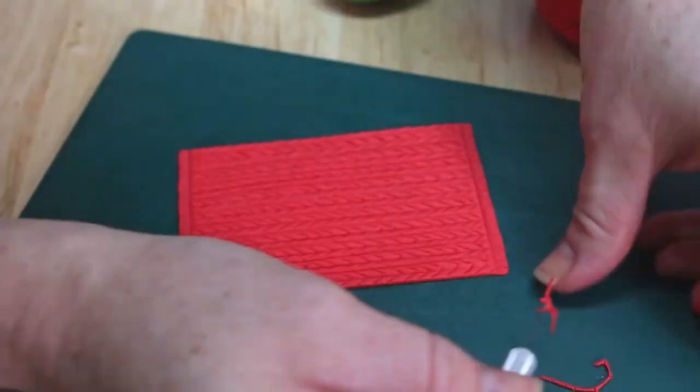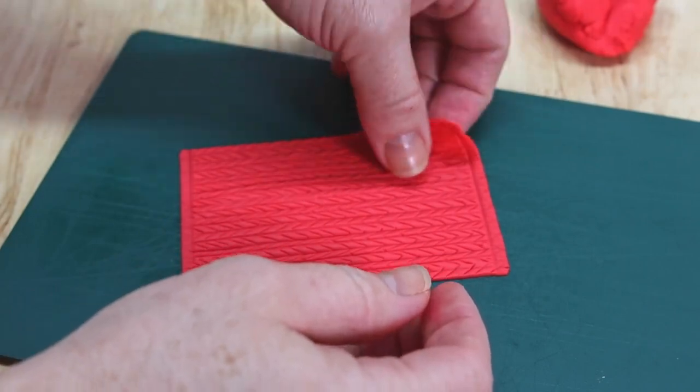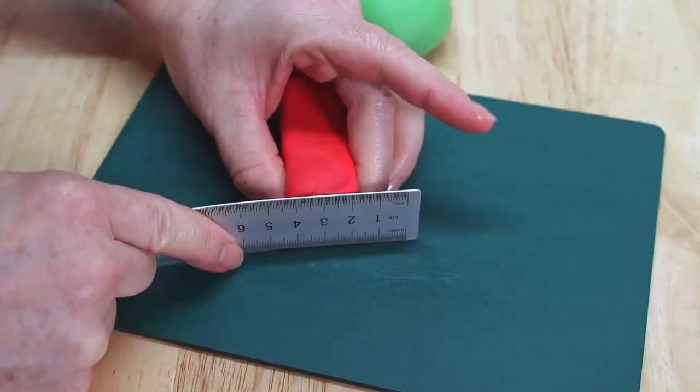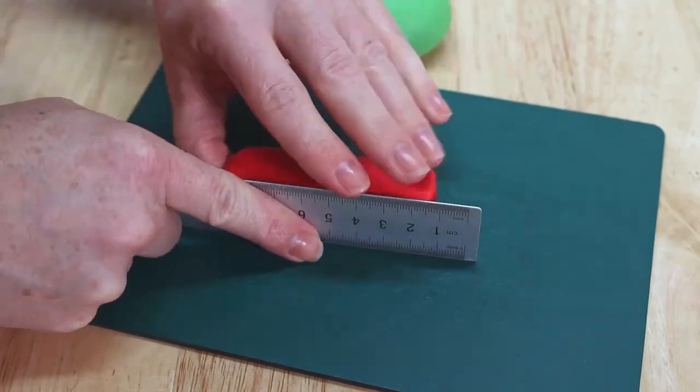And now we're just going to go ahead and give it some finished ends. And voila, I think that looks pretty neat. So now we're going to set that off to the side to dry for a bit while we work on the presents for under the tree.